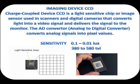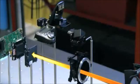A charge-coupled device, CCD, is a light-sensitive chip or image sensor used in scanners and digital cameras that converts light into a video signal and delivers the signal to the monitor. The AD converter, analog-to-digital converter, converts analog signals into pixel values. A CCD camera is similar to a film camera, except that an electronic sensor replaces the film.